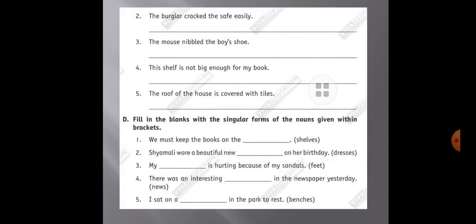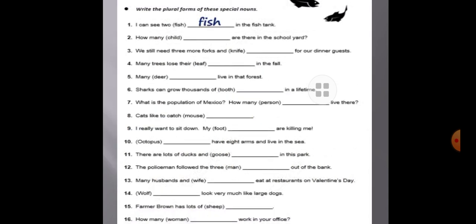Question D asks you to fill in the blanks with the singular form of the noun given in brackets. For example, SHELVES — s-h-e-l-v-e-s — the singular form is shelf, s-h-e-l-f. Like dresses becomes dress. The next worksheet asks you to write the plural form of special nouns. For example, 'I can see two fish in the fish tank' — the plural of fish can be fish or fishes, both are acceptable. 'How many children are there in the school yard?' — the plural of child is children.